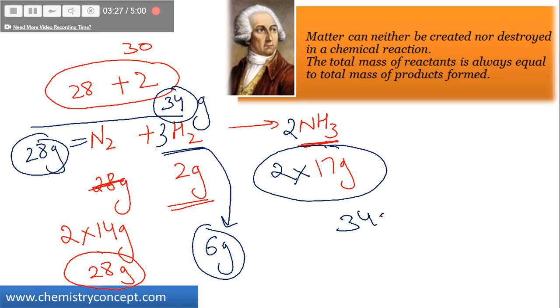And the mass of ammonia formed is also 2 into 17, that is 34 grams. So why do we need to balance our chemical equation? In order to fit it into law of conservation of mass, because total mass of reactants must be equal to total mass of product formed.